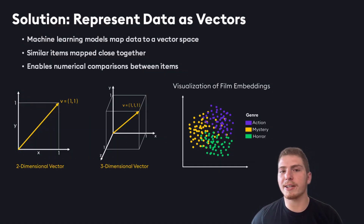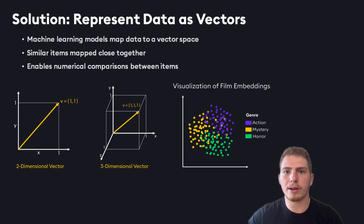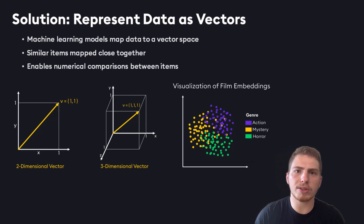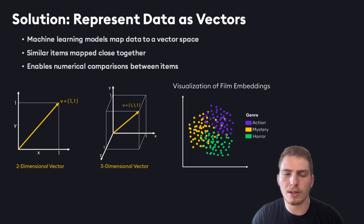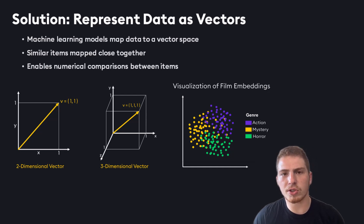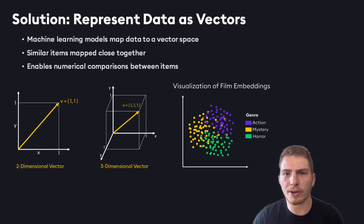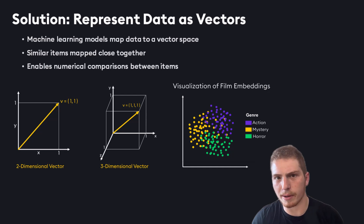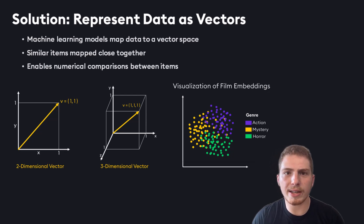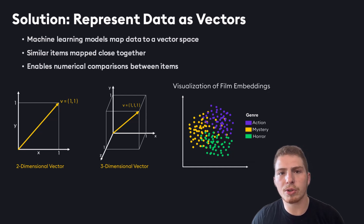The solution is to represent our data as vectors. Machine learning models can map our data into a vector space where similar items are closer together and dissimilar items are farther apart, enabling numerical comparisons between items. In practice, our vectors will have hundreds of dimensions, because every single data point — every column in our vector array — is going to have some semantic meaning, and with enough dimensions we can capture the unique and complex semantic meaning of our data.